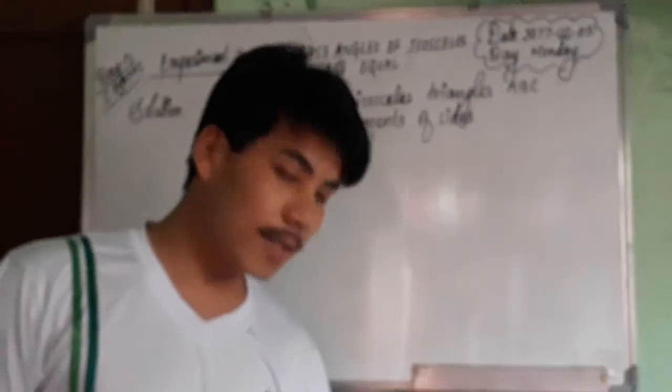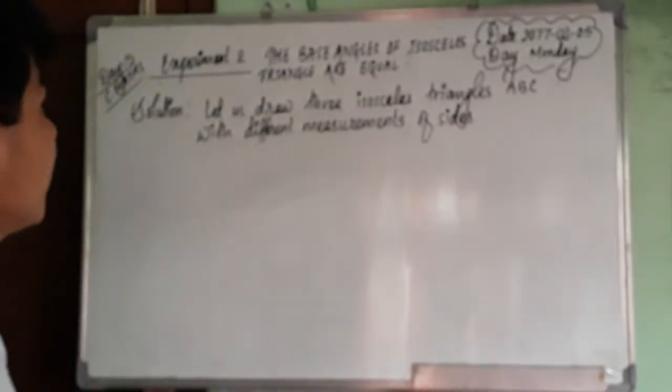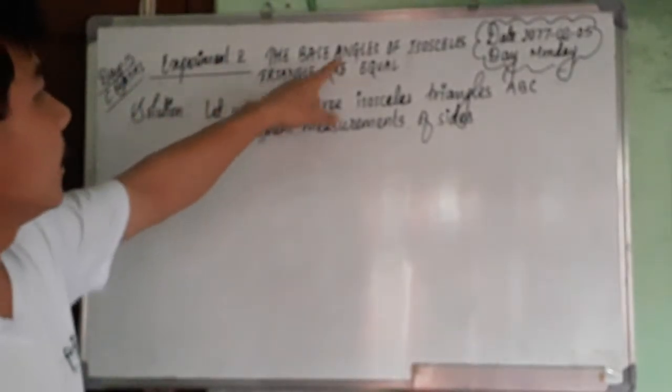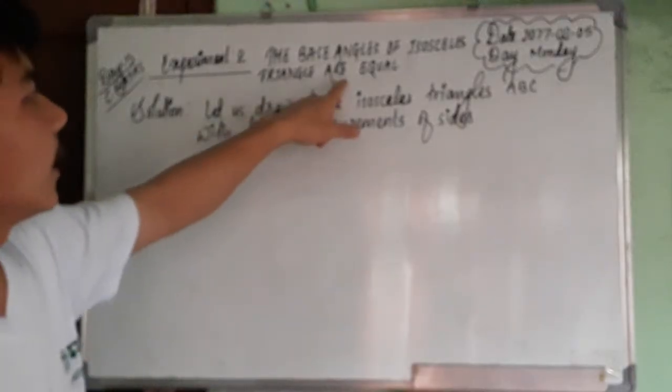Okay, welcome to the online class Day 5, Experiment Number 2. The base angles of isosceles triangles are equal. So first of all, draw three different isosceles triangles with the help of a compass or a scale. Listen, let us draw three isosceles triangles ABC with different measurements of the sides.